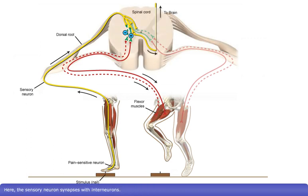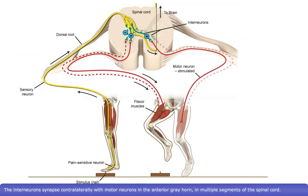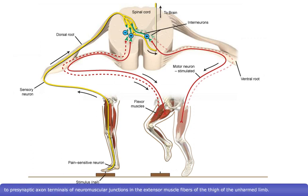Here, the sensory neuron synapses with interneurons. The interneurons synapse contralaterally with motor neurons in the anterior gray horn in multiple segments of the spinal cord. Action potentials are propagated along these motor neurons via the ventral roots of spinal nerves to presynaptic axon terminals of neuromuscular junctions.